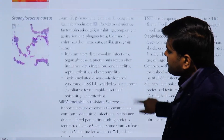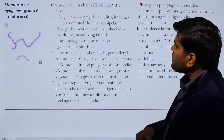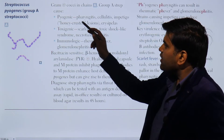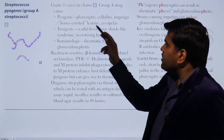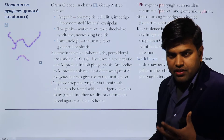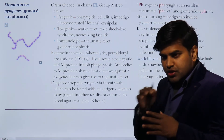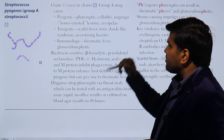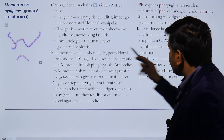Streptococcus pyogenes is a gram-positive cocci in chain, Group A Streptococcus. It causes pyogenic bacterial diseases including pharyngitis, cellulitis, impetigo — which presents as a honey-crusted lesion — and erysipelas. Patients can have both skin infections and pharyngeal infections. In skin infections, there will be cellulitis and impetigo with a honey-crusted appearance. Erysipelas is also caused by this organism.